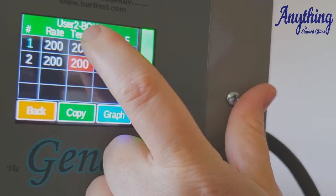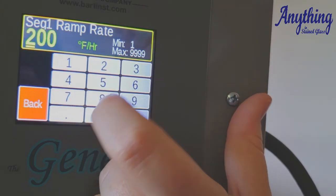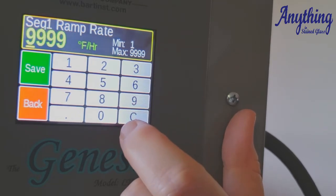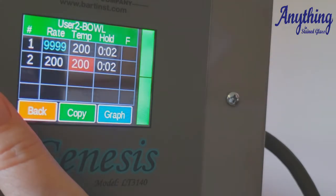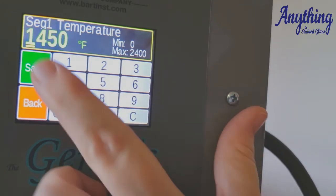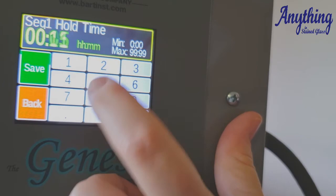So we're going to program your ramp rate on your first one to as fast as possible. So as fast as possible for this controller is 9999. You save. Let's say that our target temperature is going to be 1,450 degrees. Save. Hold time, 15 minutes.